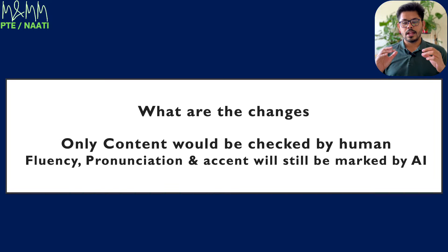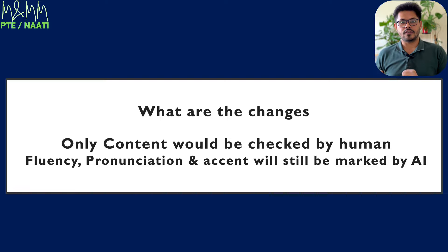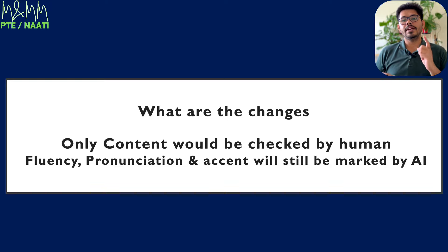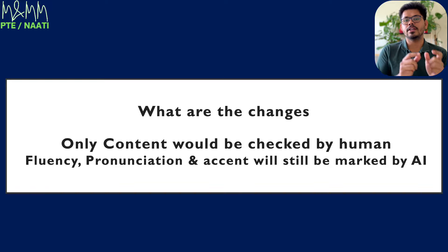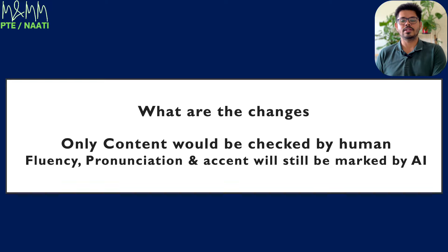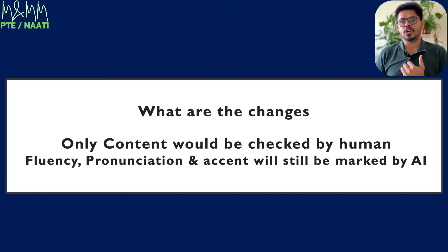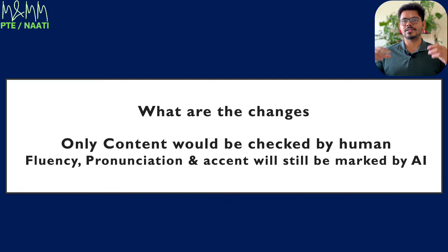We all know that PTE Academic is checked by AI — artificial intelligence. But from November 4, 2024, two topics — Describe Image and Retell Lecture — will have their content checked by a human. Fluency, pronunciation, and accent will still be checked by AI. So there is no need to make any changes to your speaking style, clarity, or pronunciation — only the content part is affected.